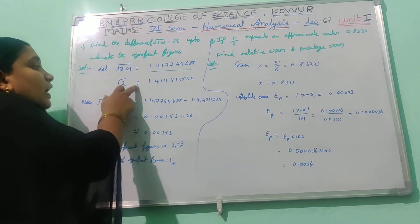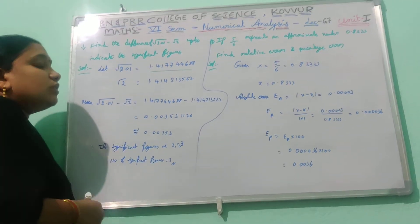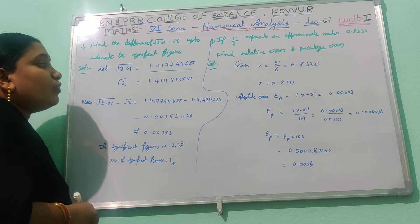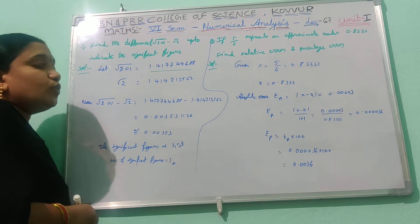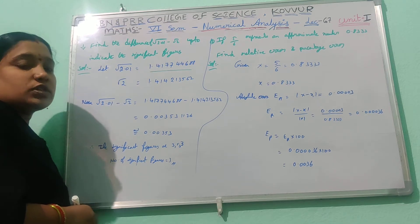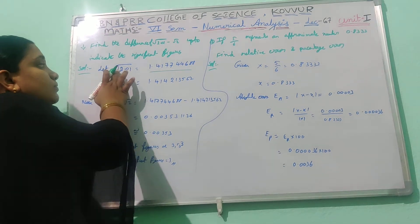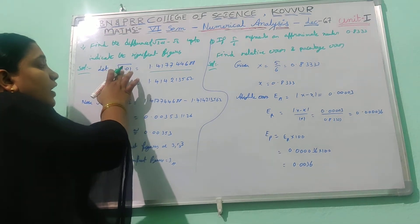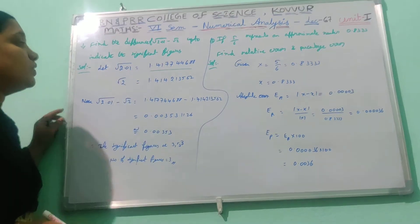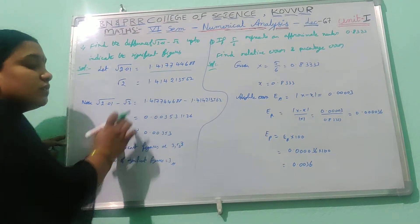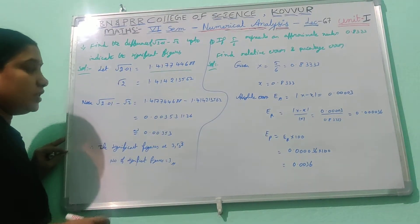Next, root 2 value only — root 2 equals 1.414213562. Now we calculate root 2 value only, and find the difference between these two values.